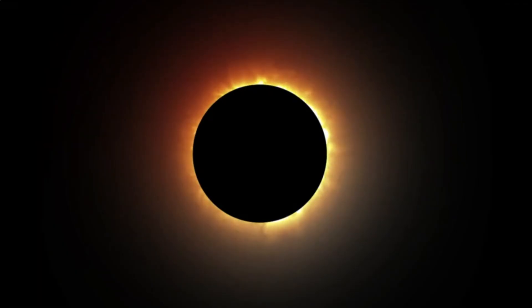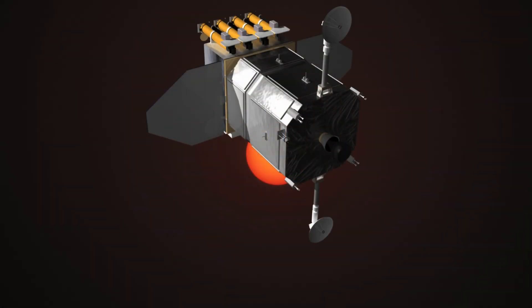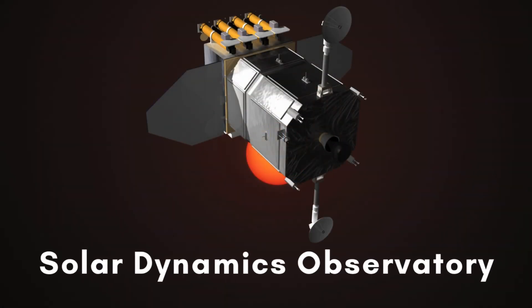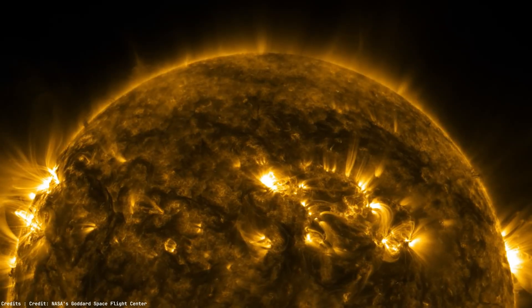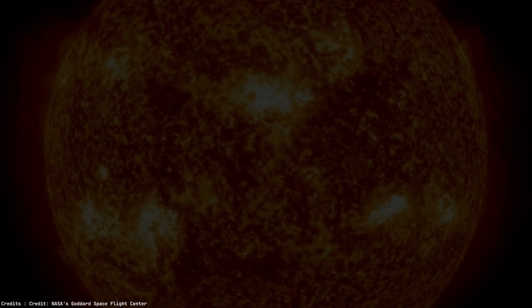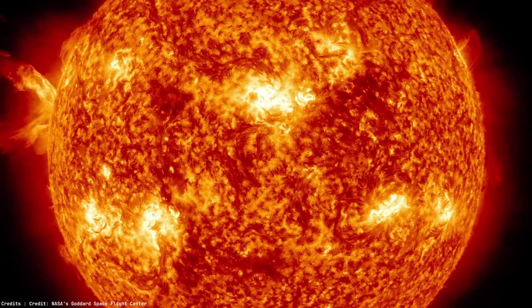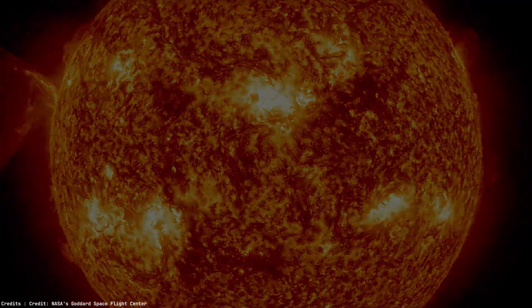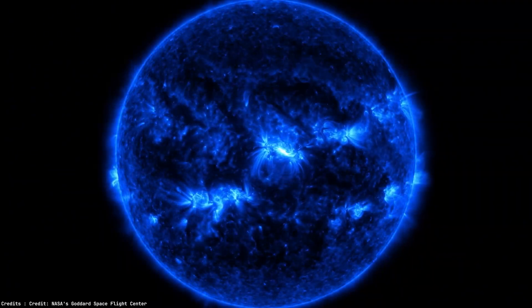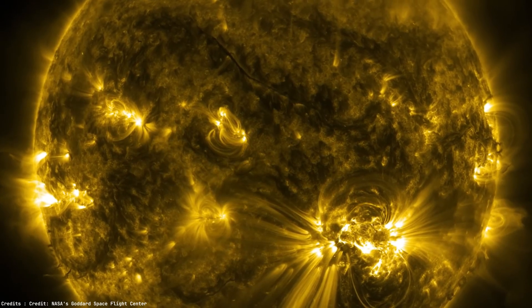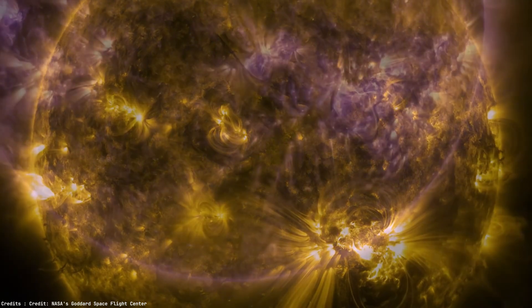Eclipses give us just a brief, magical peek at the sun's outer layer. But space telescopes like NASA's Solar Dynamics Observatory are watching 24-7, using wavelengths our eyes can't even detect. They reveal a hidden universe of solar activity. It's like putting on high-tech goggles that let us see the sun as we've never seen it before. Alive, unpredictable, and absolutely mesmerizing.